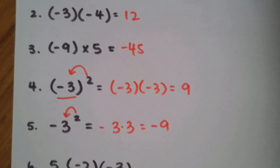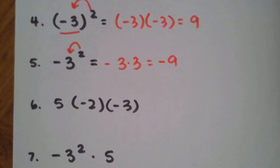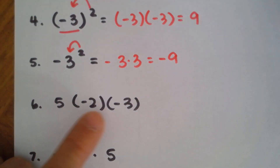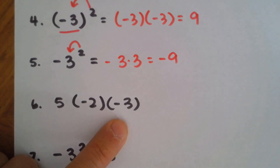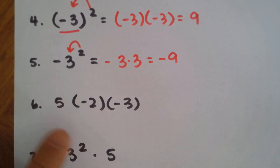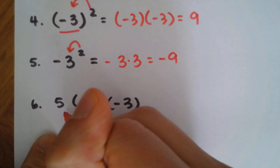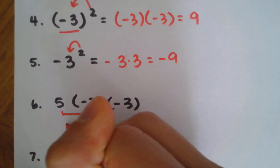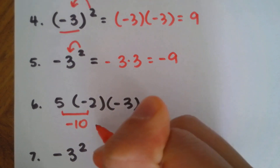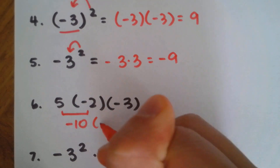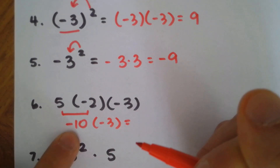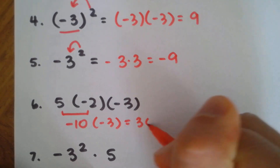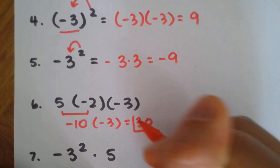Let's take a look at number six. We're going to multiply three integers all together. Let's do the first part first: five times negative two gives you negative 10. Then multiply that by negative three — negative times negative gives you positive 30. That's the answer.